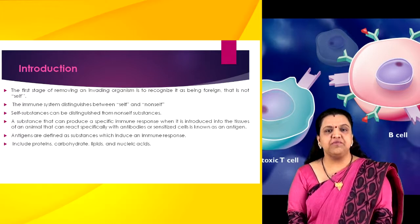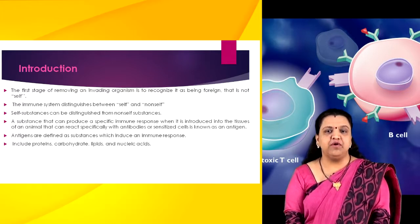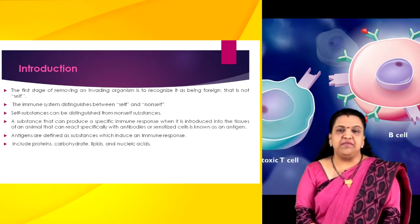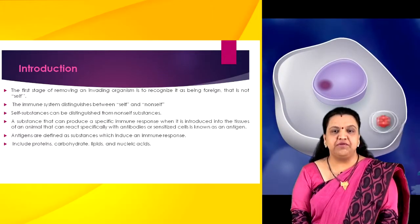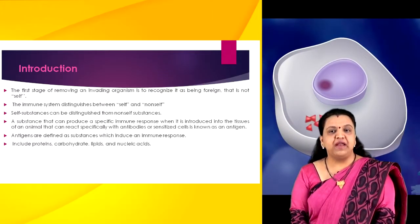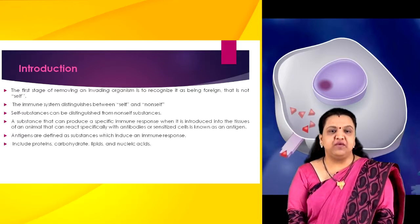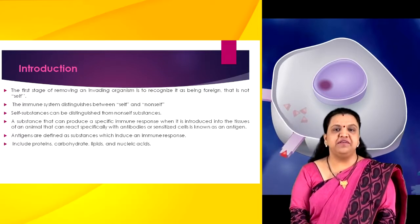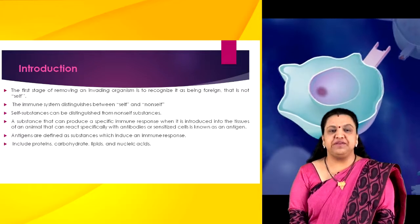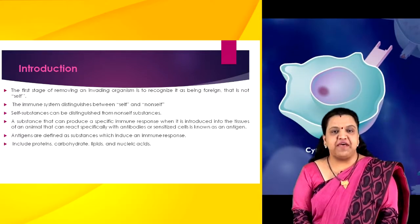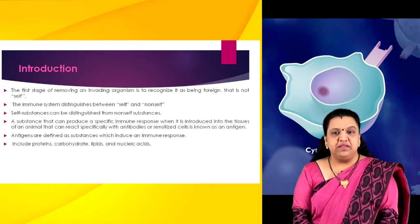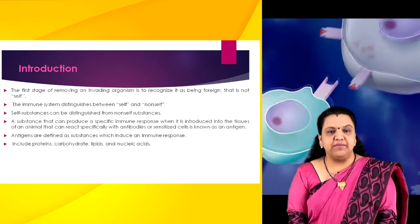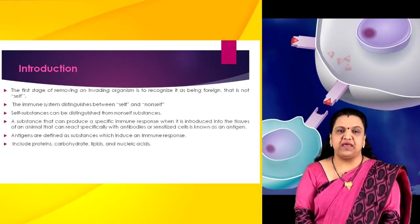The immune system sees the invader as having a number of antigens. A substance that can produce a specific immune response when introduced into the tissue of an animal, and that can react specifically with antibodies or sensitized cells, is known as an antigen. Antigens are defined as substances which induce an immune response. They include protein, carbohydrate, lipid, and nucleic acid.